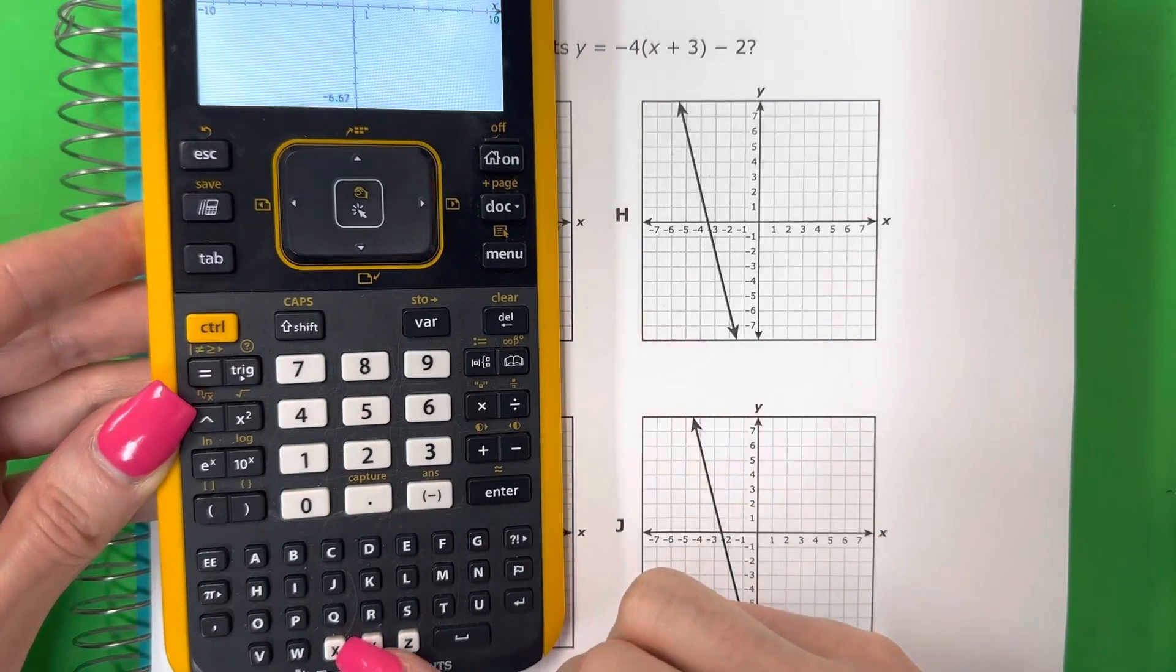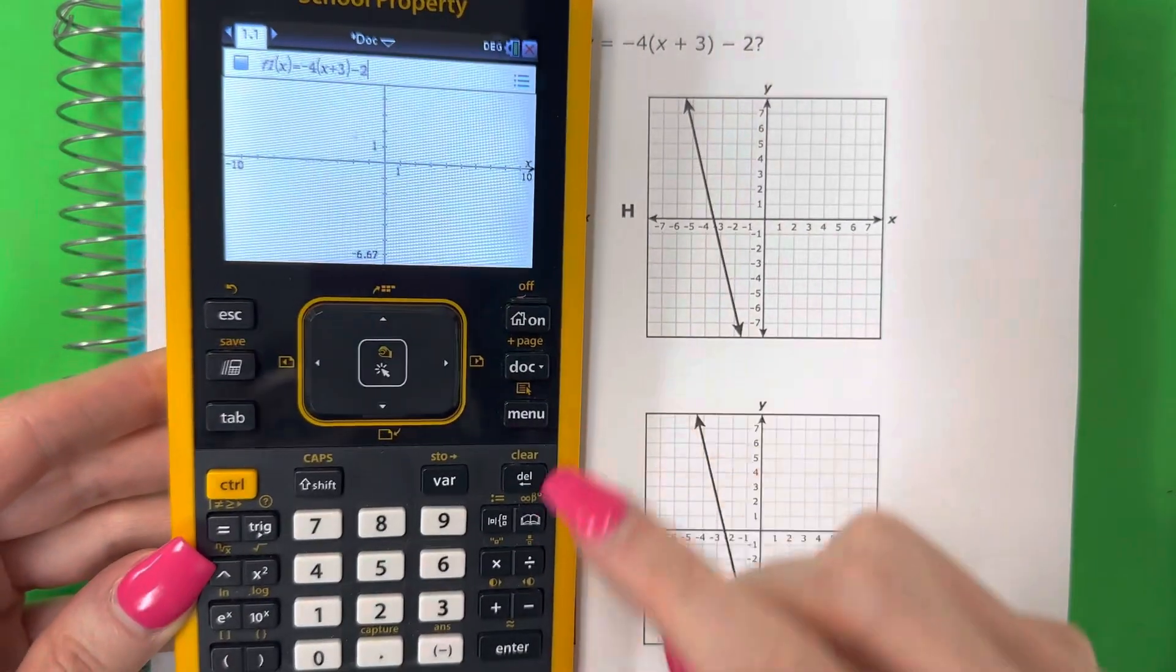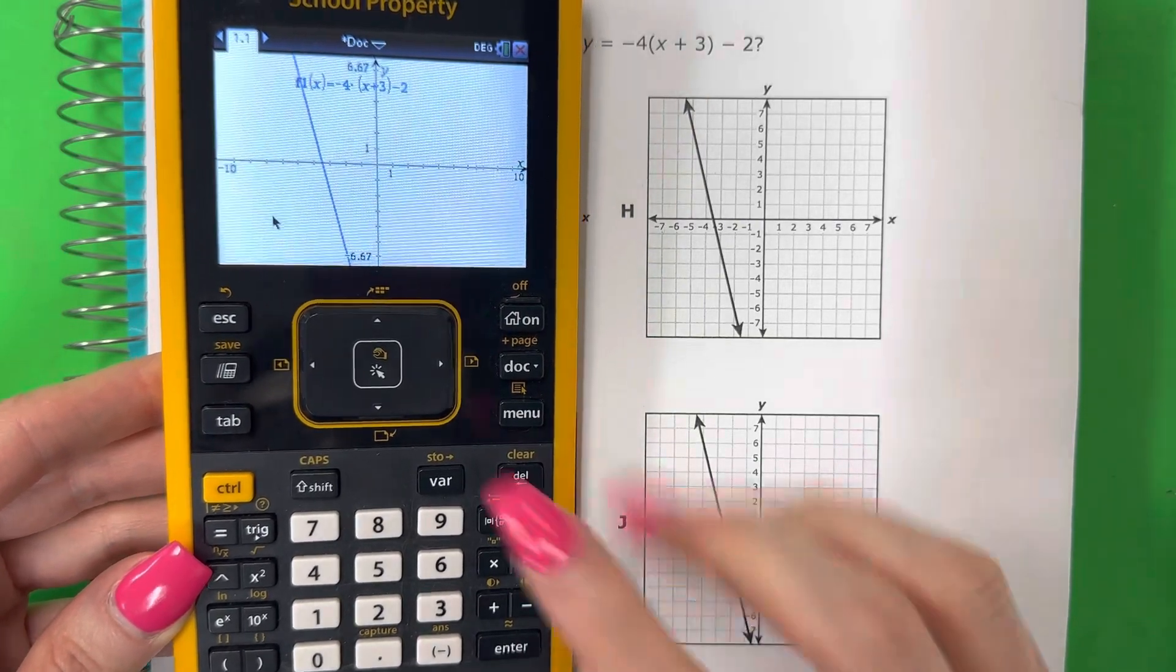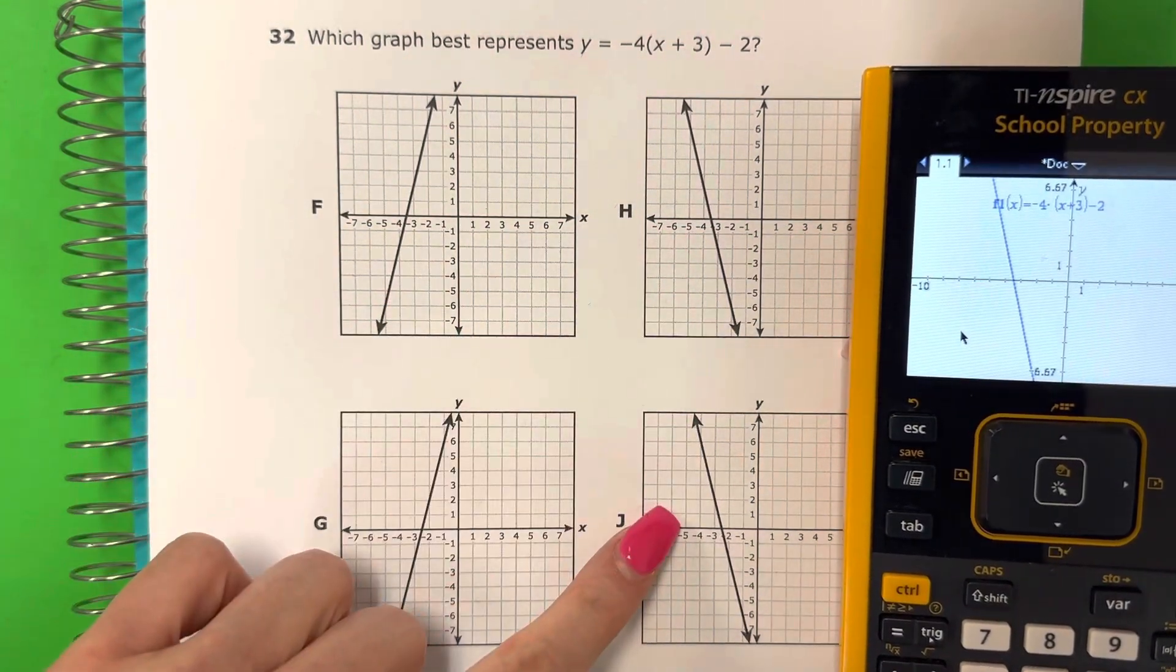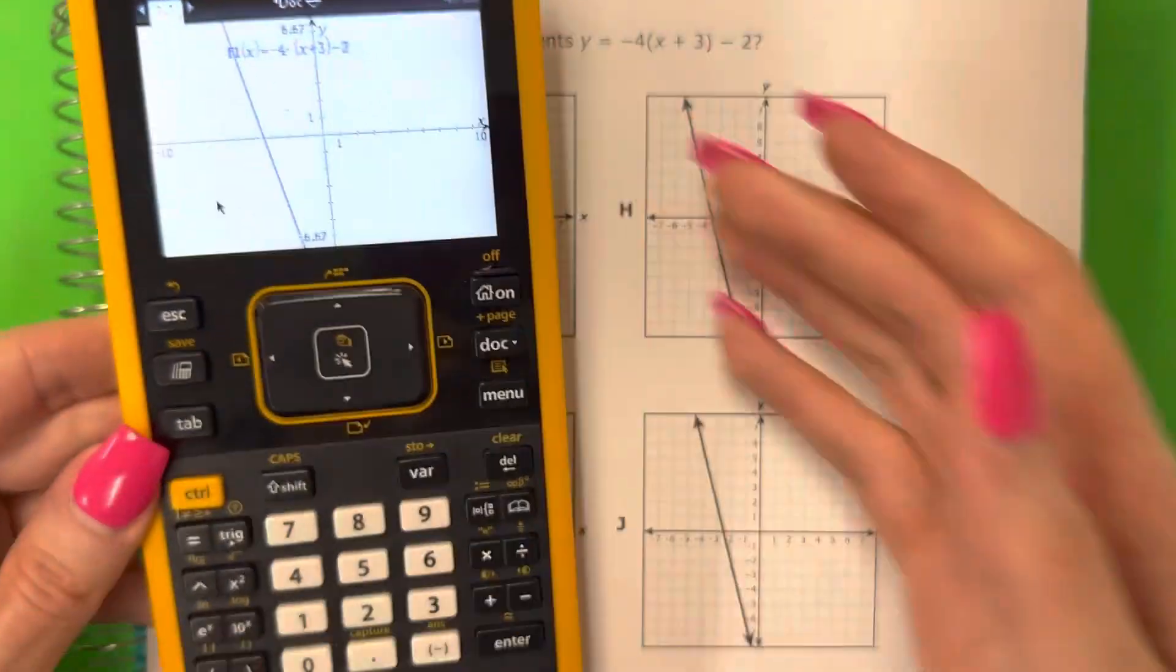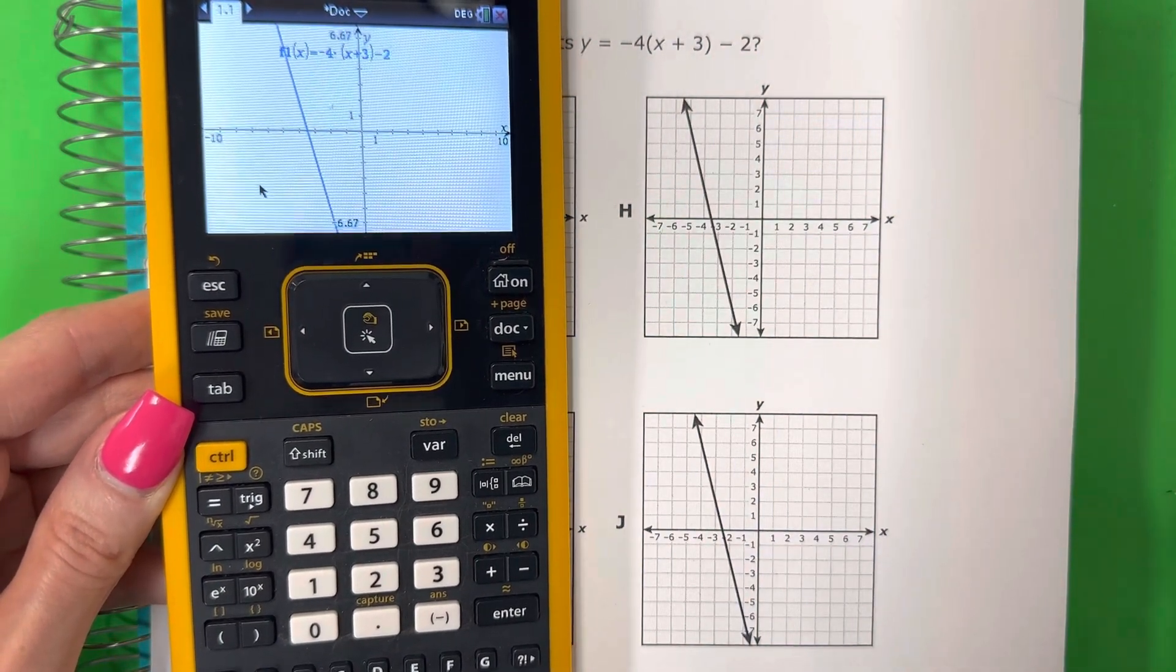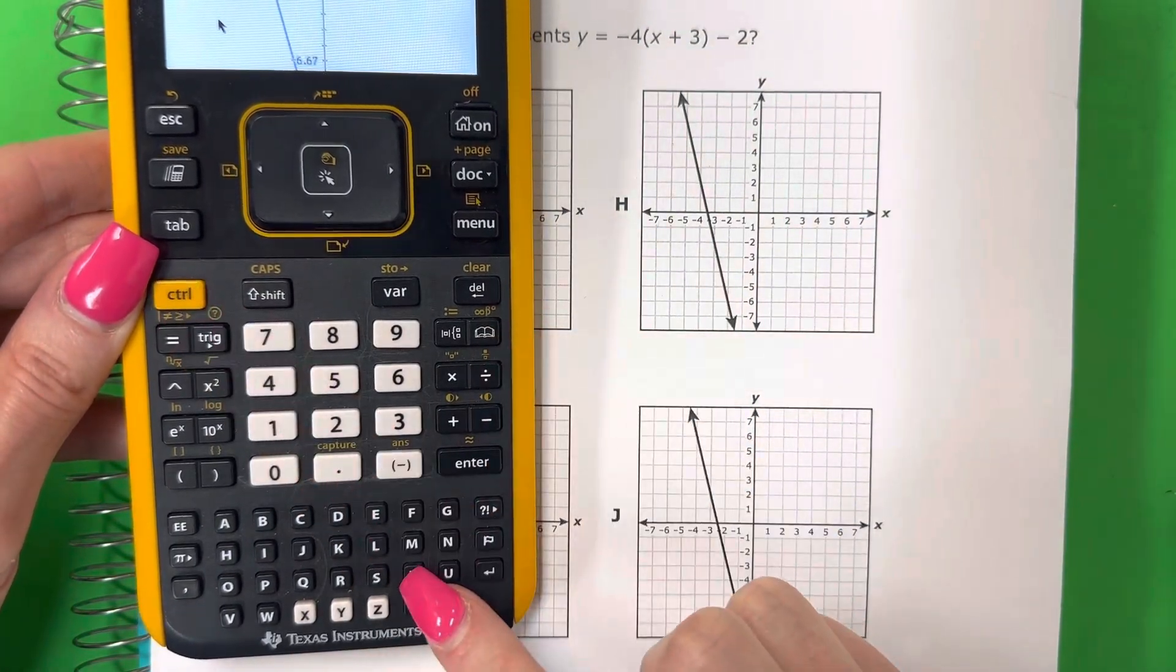x, plus 3, close parentheses, minus 2. And remember, recuerda, this is x, este es x, this is not x, este no es x. Go ahead and push enter. Let's see which one matches. Looks like it could be h or j, right? H o j. Now, we need to be very sure. Necesitamos estar muy seguros. So push control T to make a table. Necesitamos la tabla. So, control T.